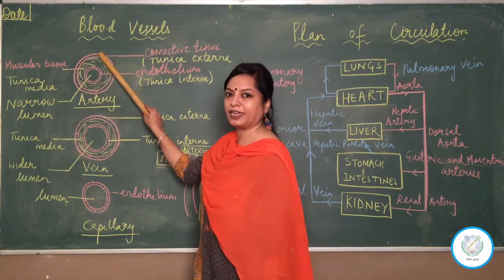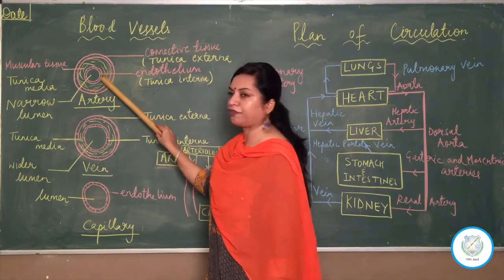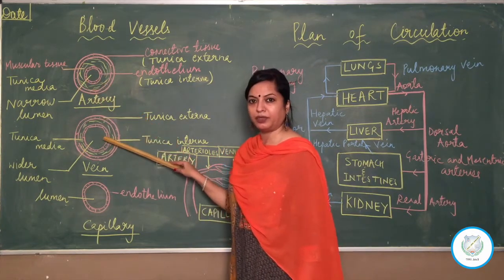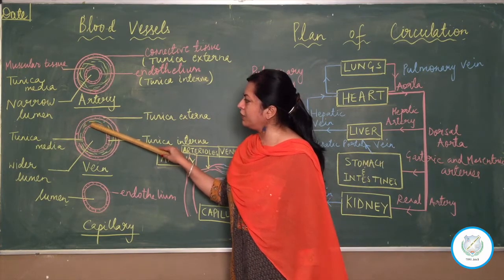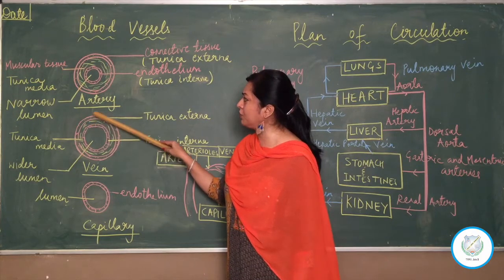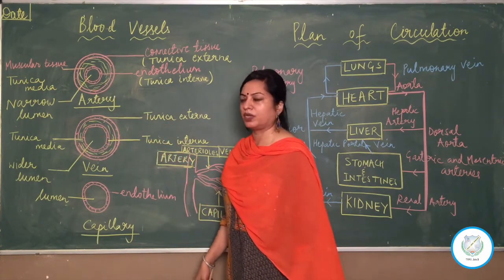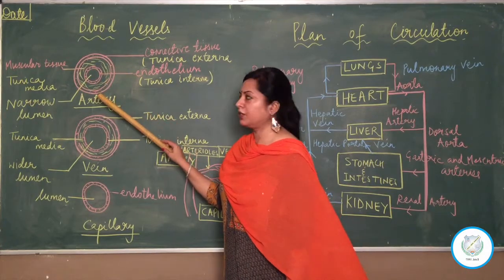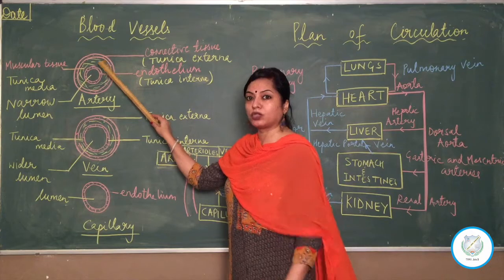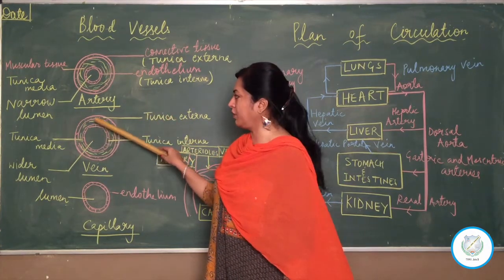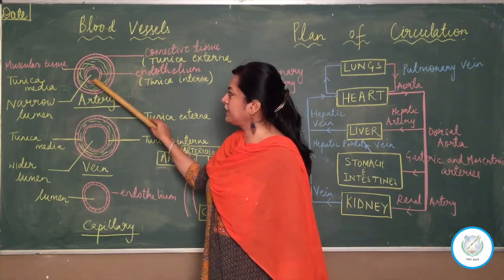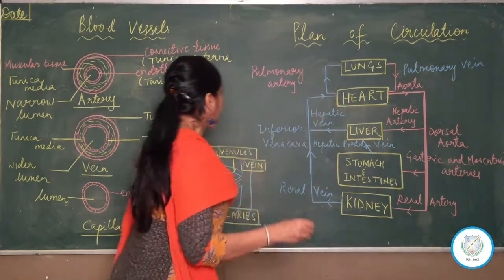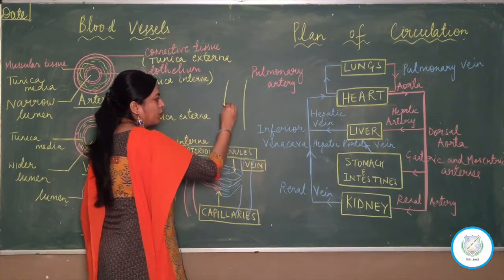The outermost layer is connective tissue, and the layer shown as elastic fibers is made up of muscular tissue. Comparing the muscular tissue layer of an artery with a vein, you will find the muscular tissue layer is much thinner in the vein compared to the artery. So arteries have thick and muscular walls, while veins have thin muscular walls. Arteries have a narrower lumen; veins have a wider lumen. One more structural difference: veins have valves.